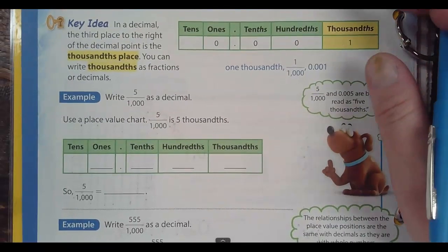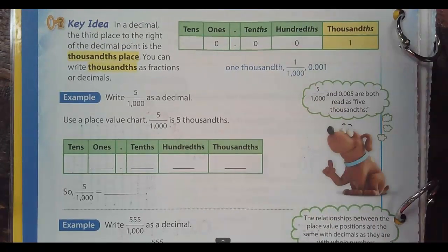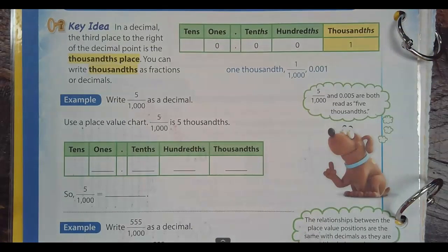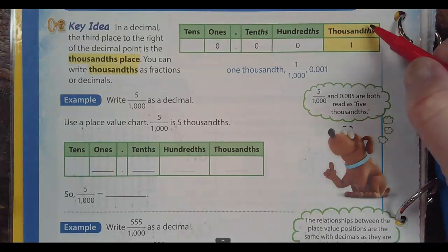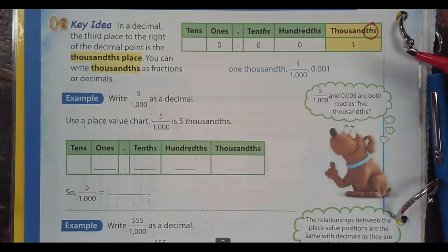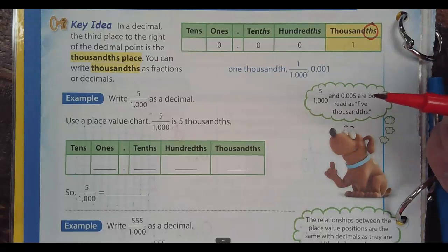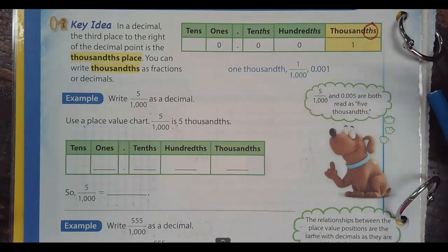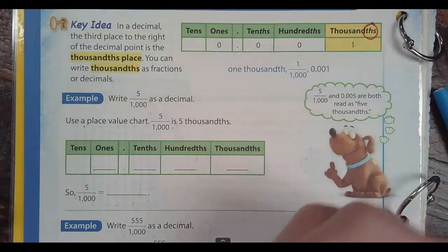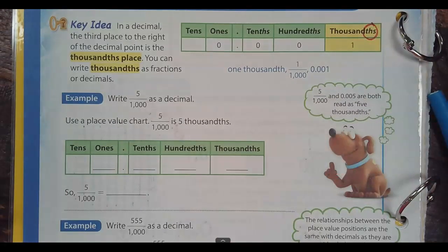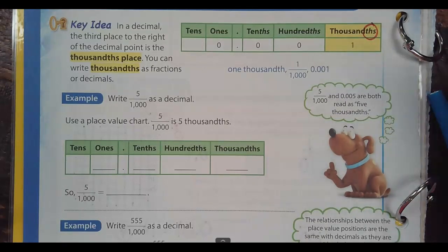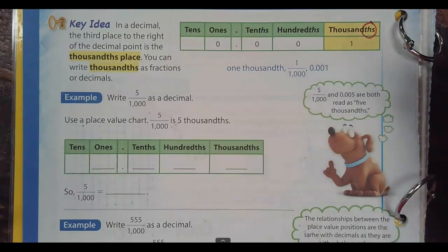Key idea: in a decimal, the third place to the right of the decimal point is the thousandths place. The big thing you need to know when writing thousandths is it has THS on it. Without the THS you're saying one thousand. There's a huge difference between a thousand dollars and a thousandth — a thousandth is less than a penny, and a thousand dollars will buy you that sweet gaming system.